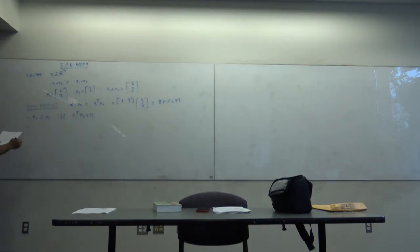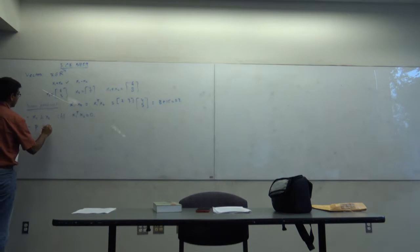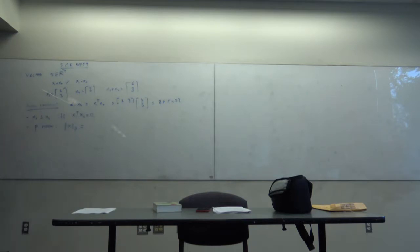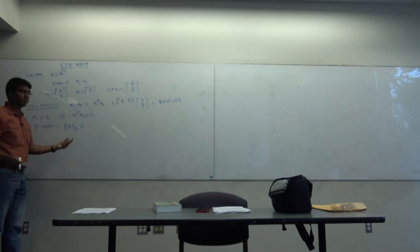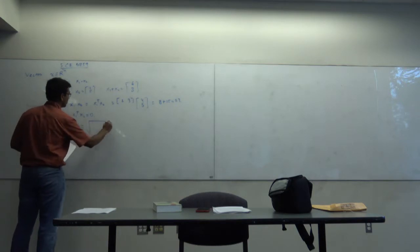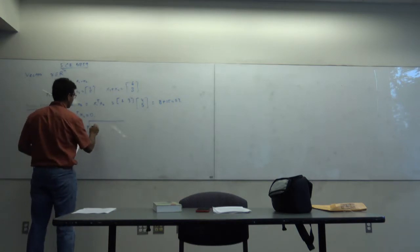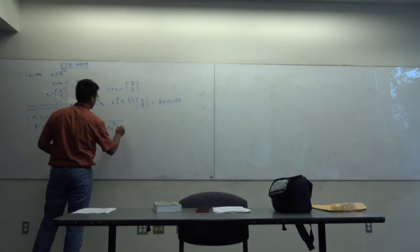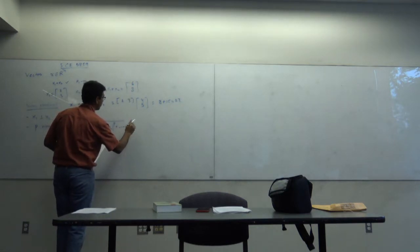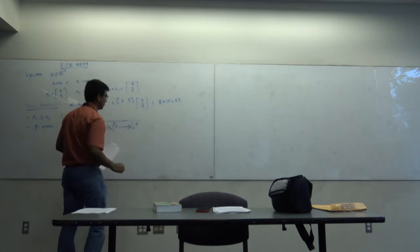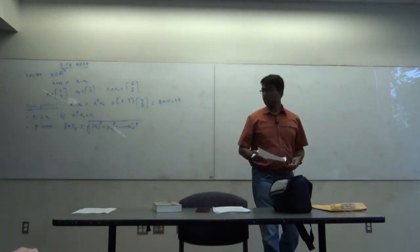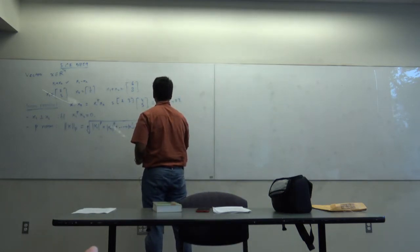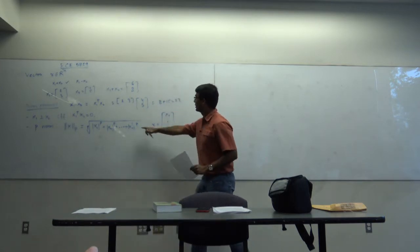I want to introduce the P-norm. We denote the P-norm of X as ‖X‖_P, which is the P-th root of |x₁|^P + |x₂|^P + ... + |xₙ|^P.